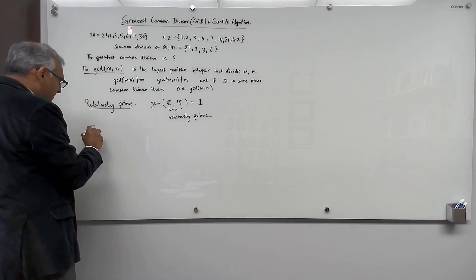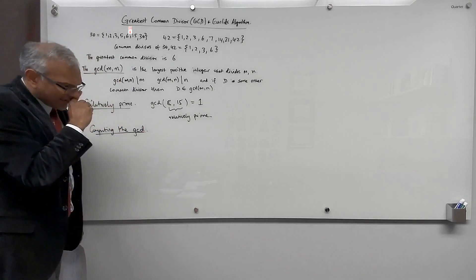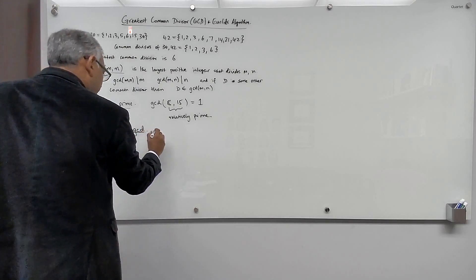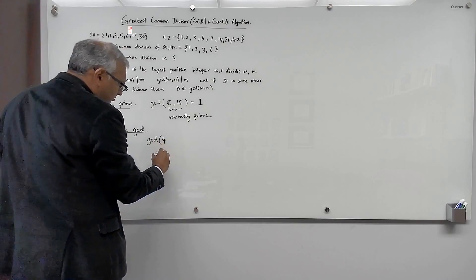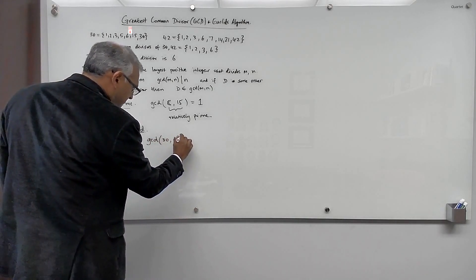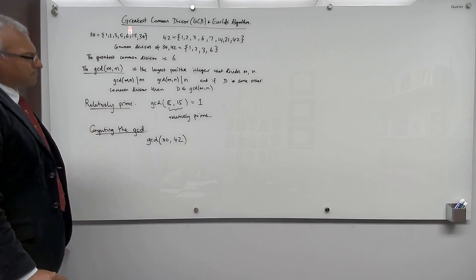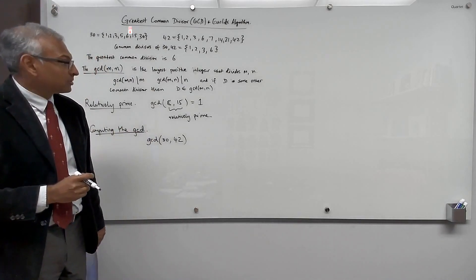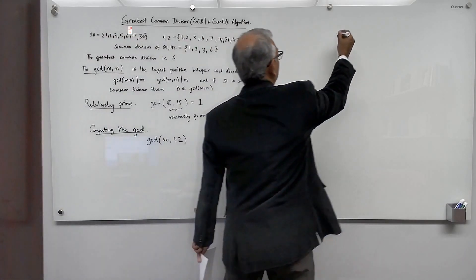Now let's talk about computing the GCD. One way is to list out the prime factors and look at what's common and take the largest thing that's common. That's a standard way, but Euclid gave a much more powerful algorithm. So we're going to discuss Euclid's algorithm — it's so powerful and so fundamental to number theory that it's worth spending a little bit of time on.